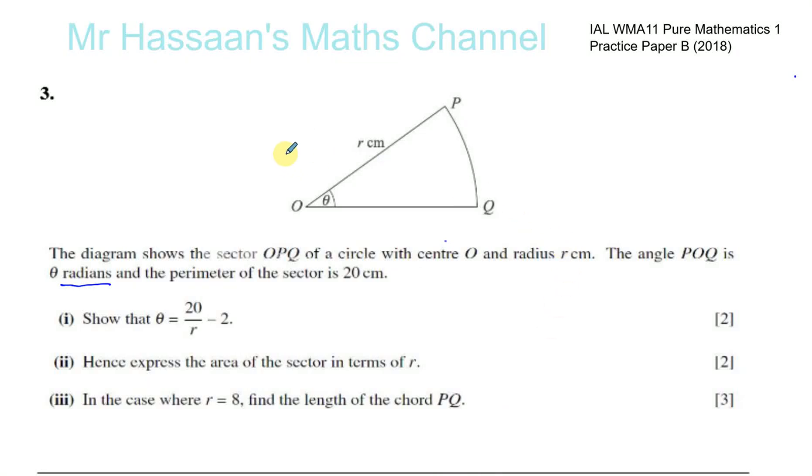Okay, question number three from P1, practice paper B, International A Level. The diagram shows a sector OPQ of a circle with center O and radius R. The angle POQ is theta radians - it's very important that we take that into account. And the perimeter of the sector is 20 centimeters.